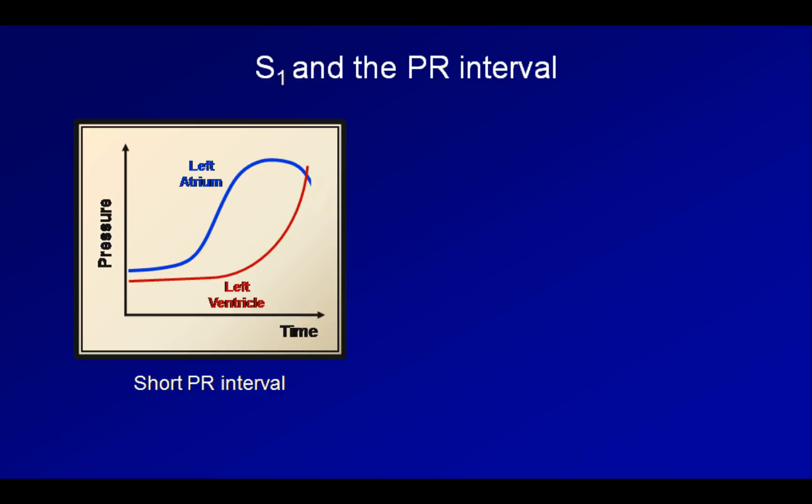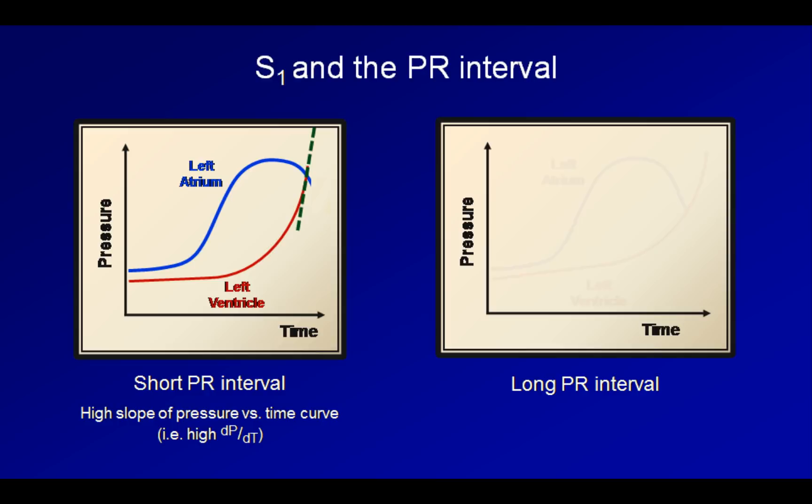In the second graph, we see the situation with a long PR interval. In this case, the left ventricle is still in its early, still-accelerating phase of contraction when its pressure exceeds that in the left atrium. Therefore, the slope of this curve here is relatively less, which will result in a relatively softer S1.